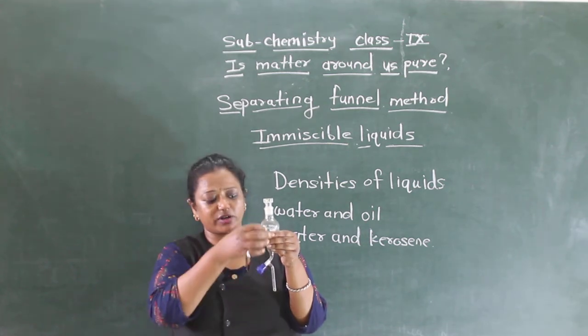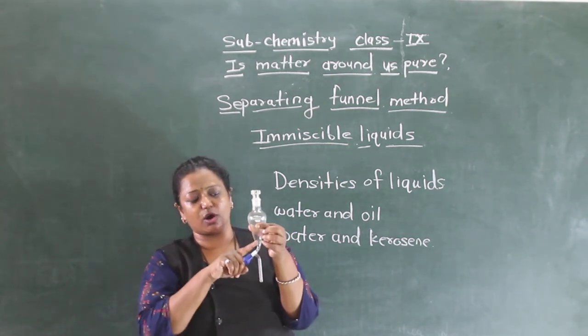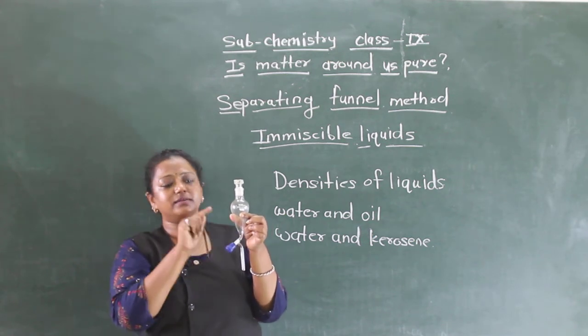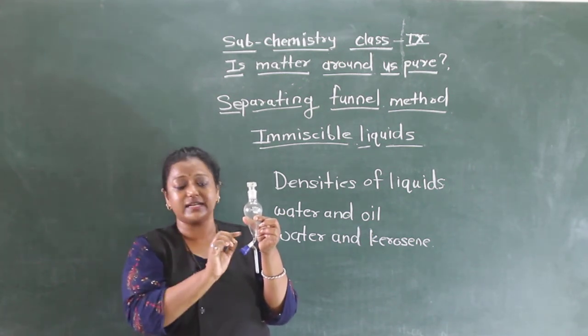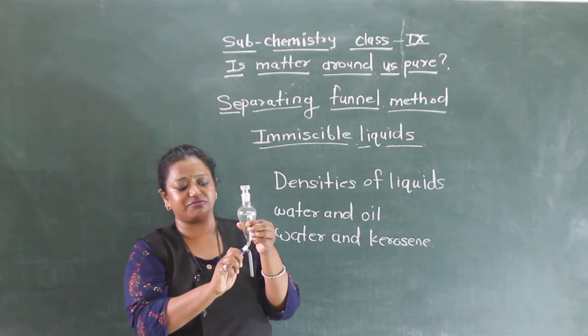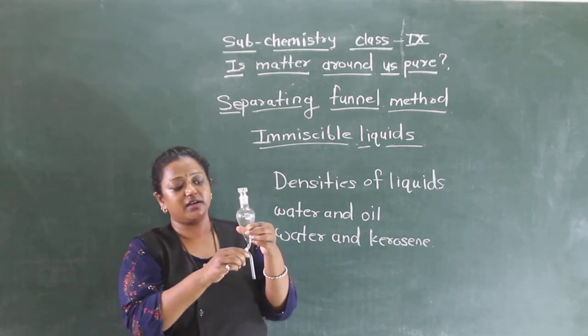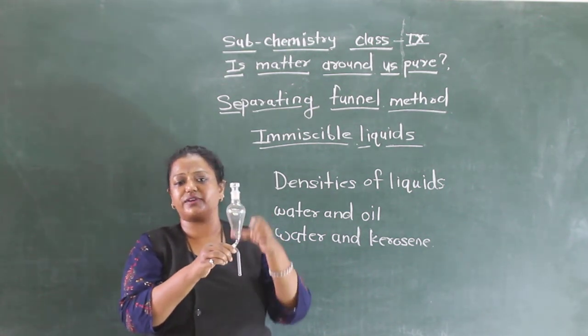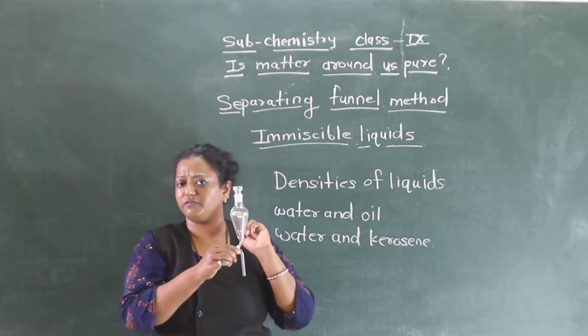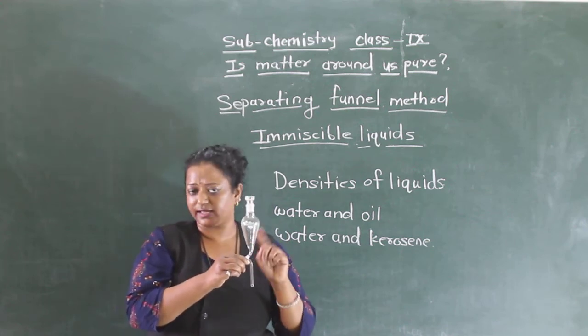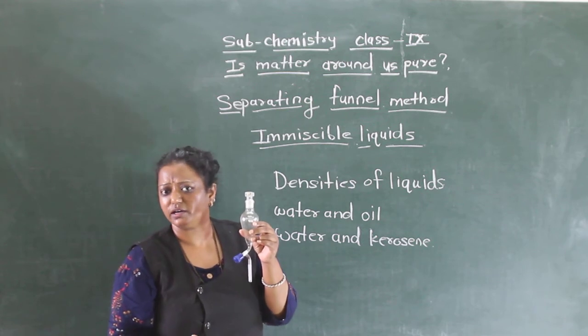The water will come out first and when the layer of oil starts coming, we will turn off this knob. So here we can see two different liquids now. Here in the separating funnel, we have oil and below we have separated water.